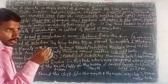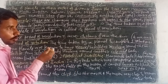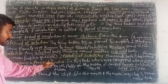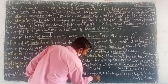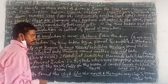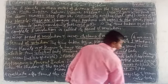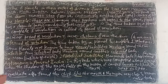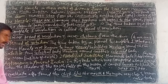When the shadow of the Earth falls on the Moon, it is a lunar eclipse; when the shadow of the Moon falls on the Earth, it is a solar eclipse. Aryabhatta also calculated the distance between Earth and Moon, and the value he found is very close to the value we know today.